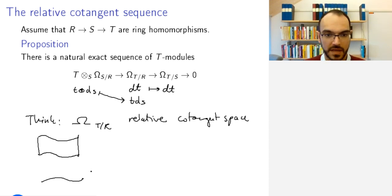I have some big variety X mapping down to a variety Y, and I have a point here P, and over P I have the fiber.